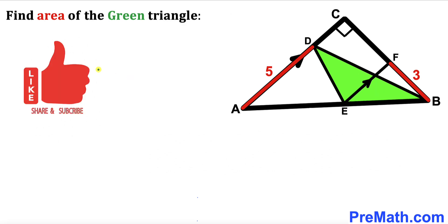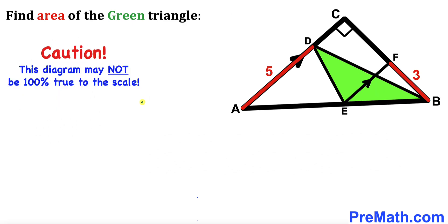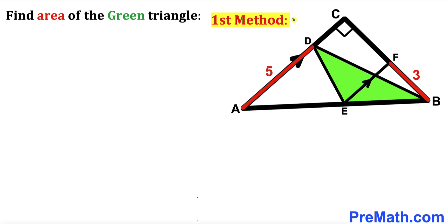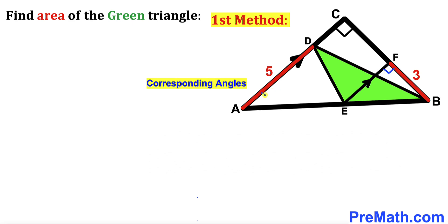Please give a thumbs up and subscribe, and keep in mind that this figure may not be 100% true to scale. Now, since lines AC and EF are parallel to each other, angle EFB is 90 degrees. Moreover, the corresponding angles are congruent.